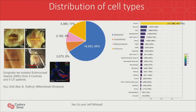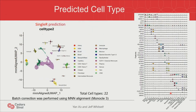As an example, I want to talk about a little study here. This was a set of five control and five CF patient submucosal glands that we isolated. Kyushik, who is in the audience, and Katherine Weikenheiser, who is the pathologist, surgically isolated these tissues. Yan Zhu and Jeff Witsett did a single-cell RNA-seq analysis. We were able to do single-cell RNA-seq studies from this. Most of it was epithelial cells, because surgically we were able to isolate the submucosal gland. A small percentage, about 30-40%, were non-epithelial cells, and a large percentage were also serosal cells. Much of this data is going to be deposited in the human atlas of the lung very soon. This is Yan Zhu and Jeff Witsett's data, and they have been gracious in allowing me to use it.